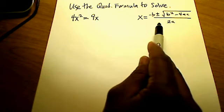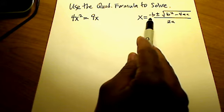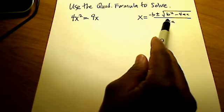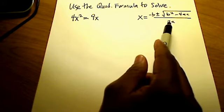I've got the quadratic formula over here, negative b plus or minus the square root of b squared minus 4ac all over 2a.